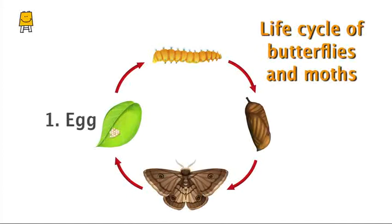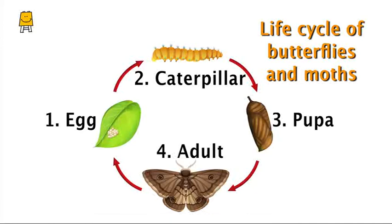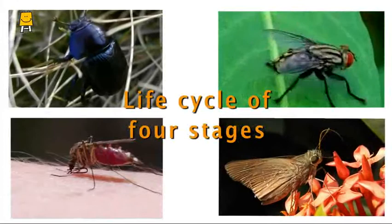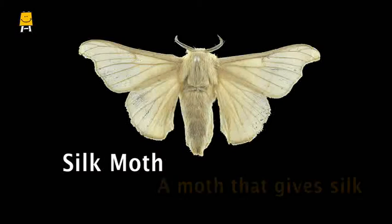So in all, there are four stages in the life cycle of butterflies and moths: egg, caterpillar, pupa, and adult. Beetles, flies, mosquitoes, and moths develop in four similar stages. We know that the silk moth, which is a moth that gives silk, is an insect too. Can you guess in which stage of its life cycle we would get silk?